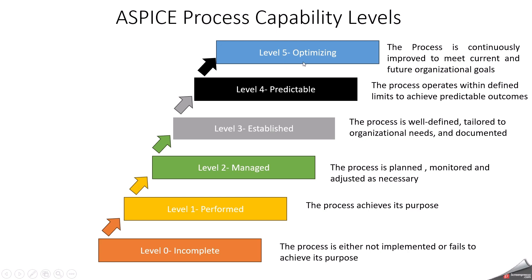Level 5 is named as optimizing, meaning continuous improvement. The process is continuously improved based on a quantitative understanding of the system. In level 5, it is proactively managed and optimized through innovation.